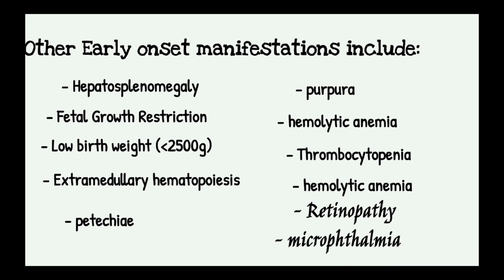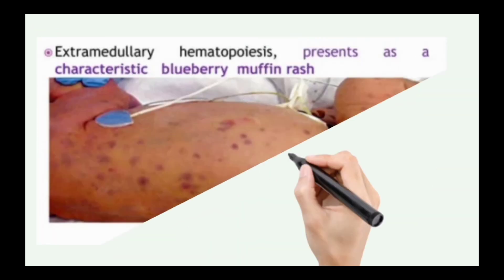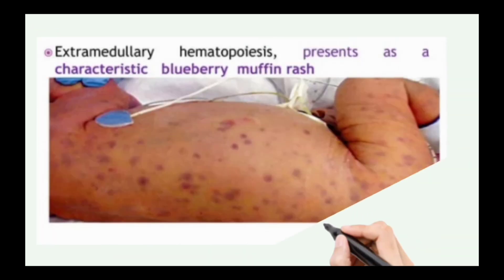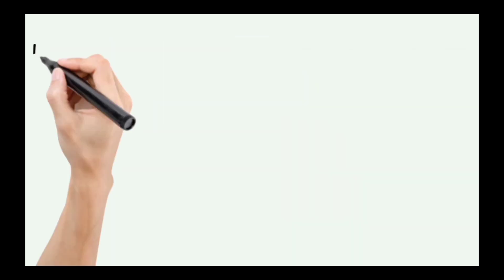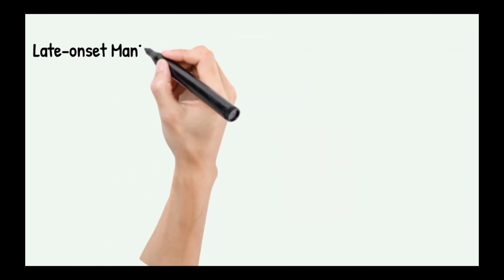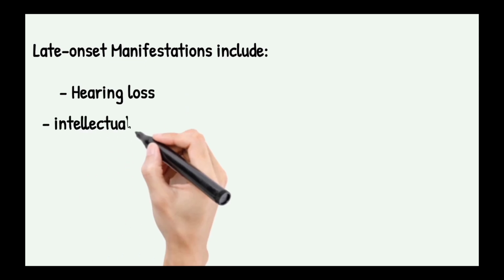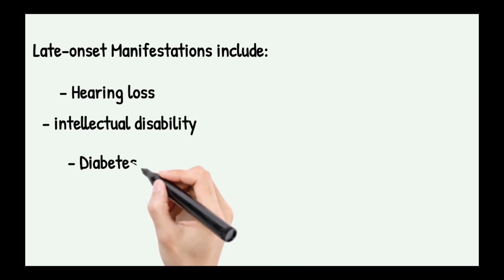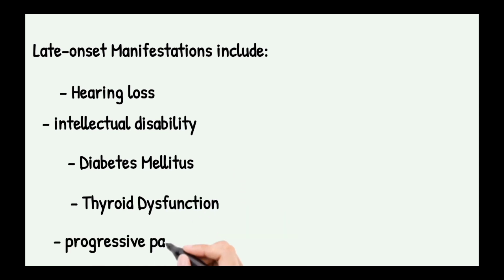Extramedullary hematopoiesis presents as a typical characteristic blueberry muffin rash. Late onset manifestations include hearing loss, intellectual disability, diabetes mellitus, thyroid dysfunction, and progressive rubella encephalitis.